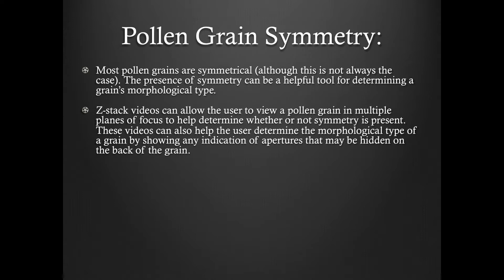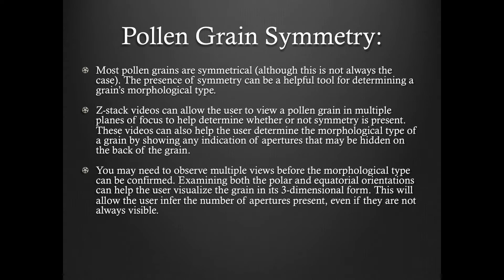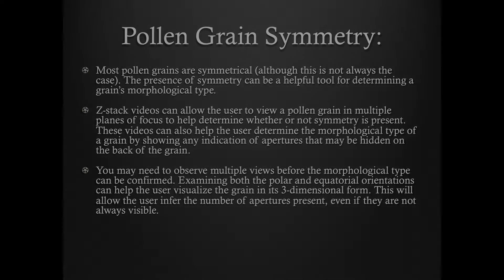You may need to observe multiple views before the morphological type can be confirmed. Examining both polar and equatorial orientations can help the user visualize the grain in its three-dimensional form. This will allow the user to infer the number of apertures present, even if they are not always visible.